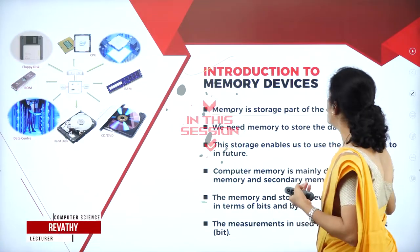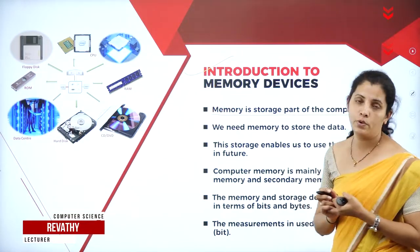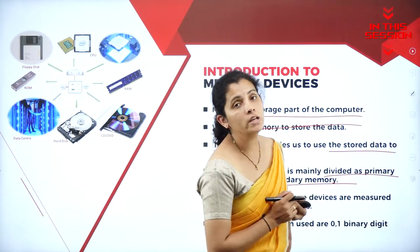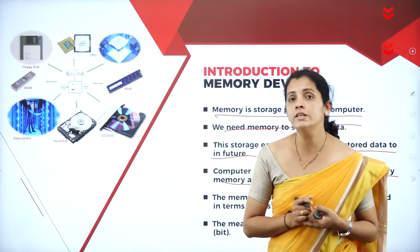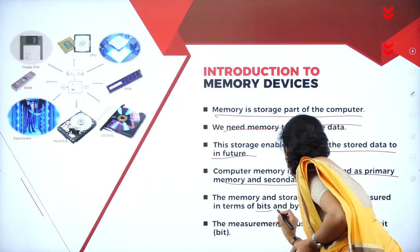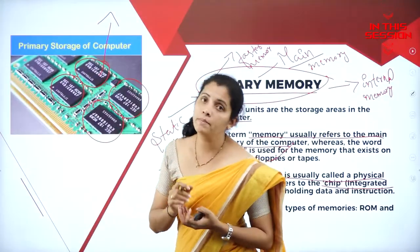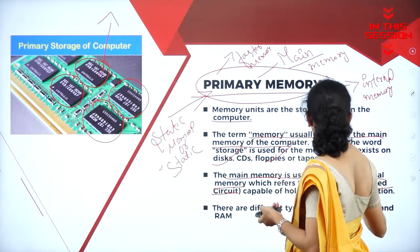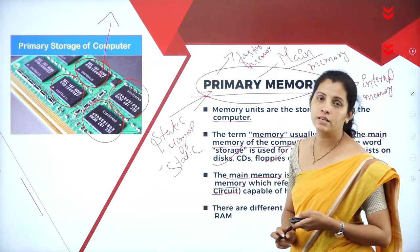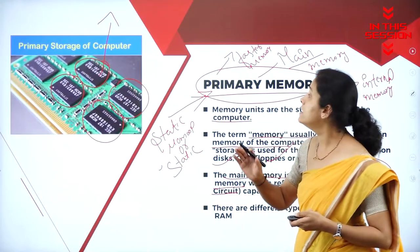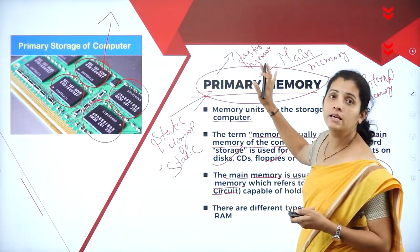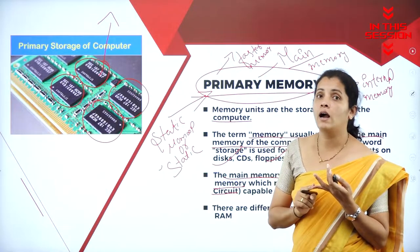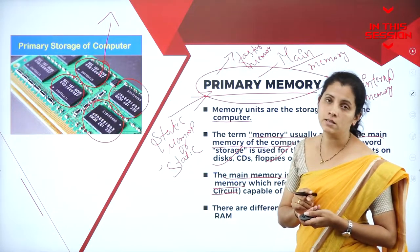Memory is a storage part of the computer system. Memory and storage devices are measured in terms of bits and bytes. The primary memory is also called main memory or physical memory, and it is classified into two types: read only memory and random access memory.